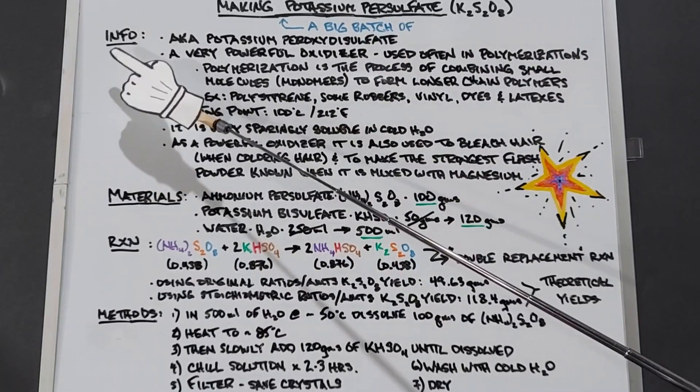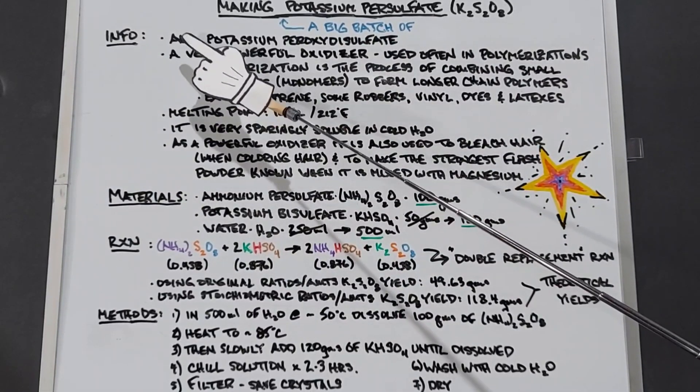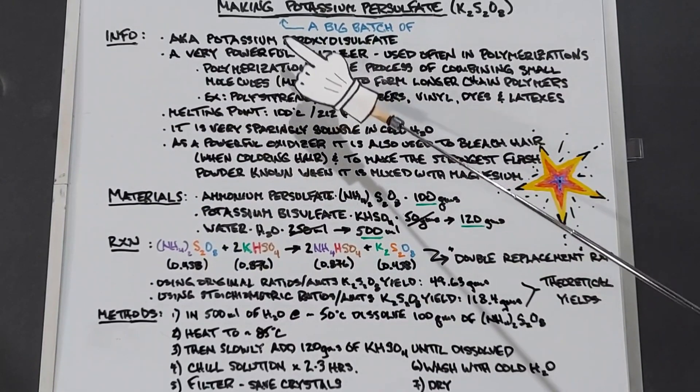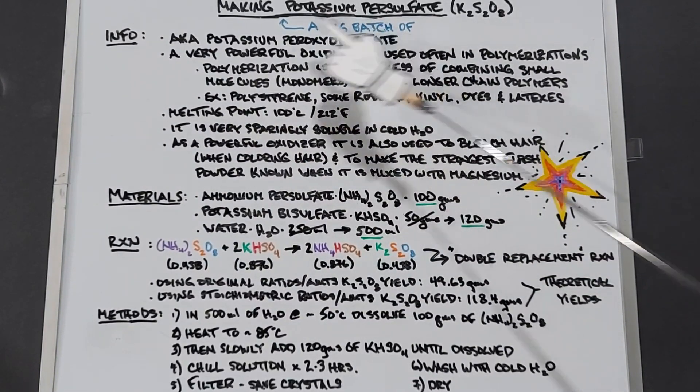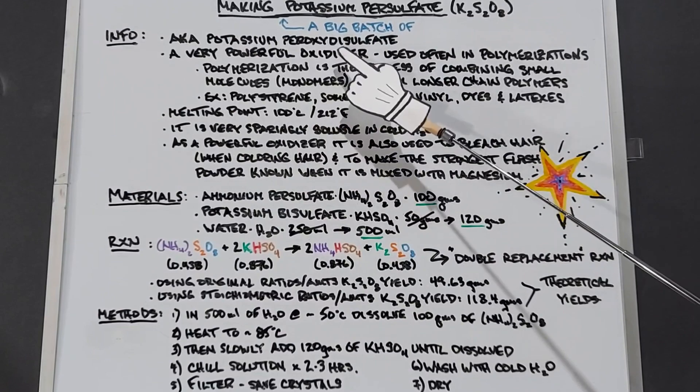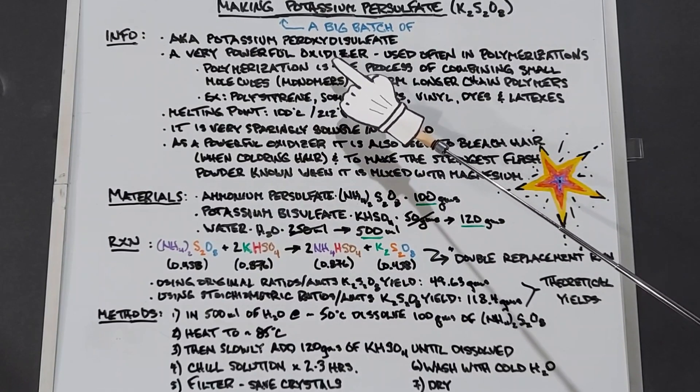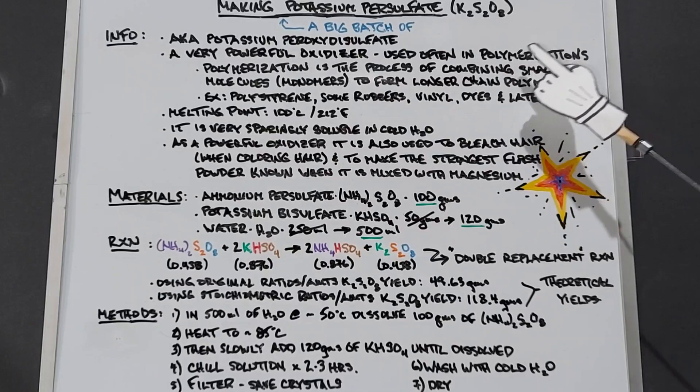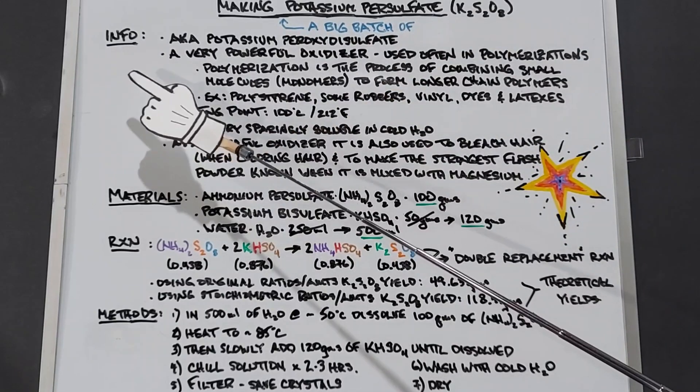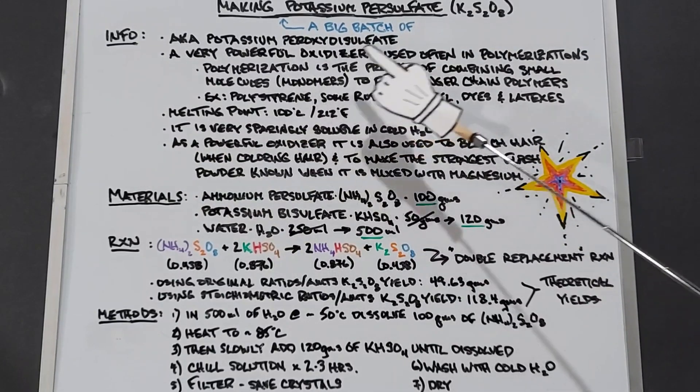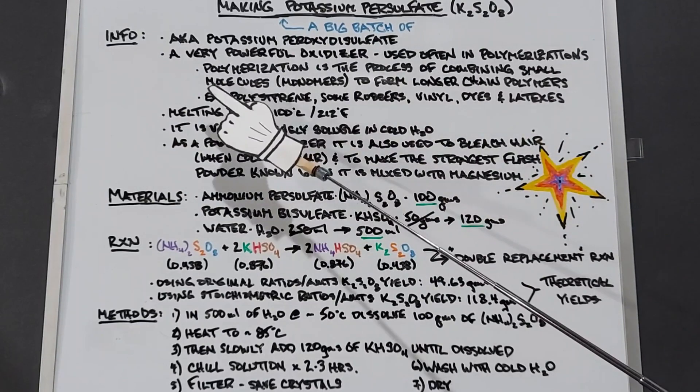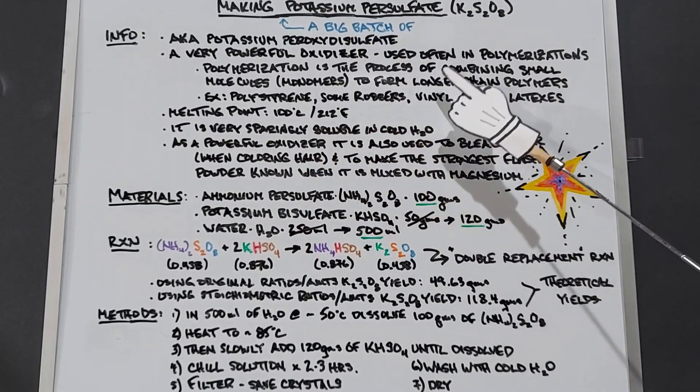I'm going to go over some information. Some of this might be a repeat. Potassium persulfate is also known as potassium peroxydisulfate. It is a very powerful oxidizer. I cannot understate that enough. It's used often in the polymerizations of chemicals, and a polymerization is the process of combining small molecules called monomers to form longer chain polymers.